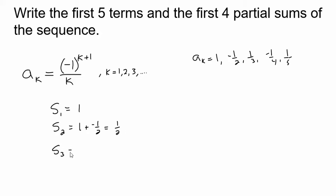S sub 3, the sum of the first three terms. I'll just write it with a minus here. That's going to be 1 half plus 1 third. 1 half plus 1 third. That would be 3 sixths plus 2 sixths. That would be 5 sixths.